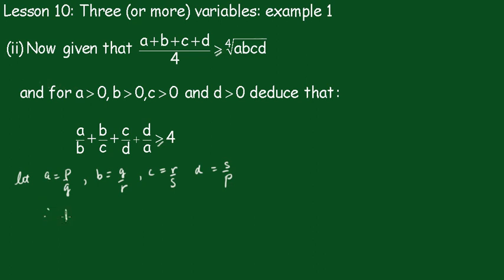Therefore, (p/q + q/r + r/s + s/p)/4 is greater than or equal to the fourth root of (p/q × q/r × r/s × s/p).